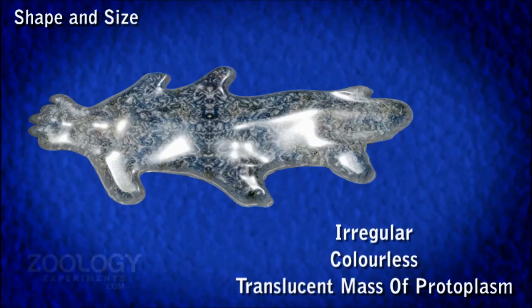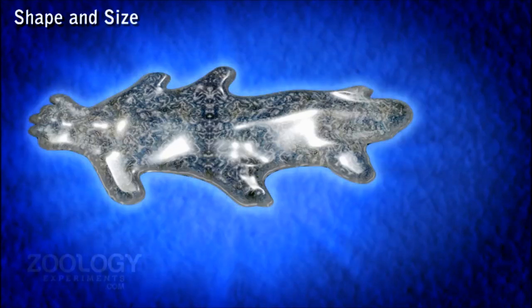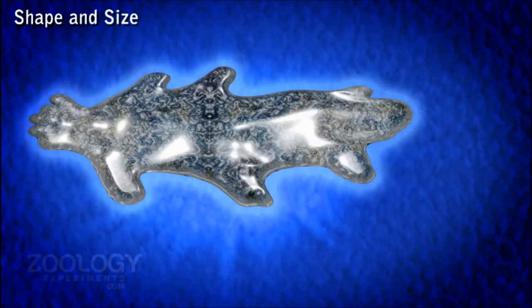It constantly changes its shape, producing and withdrawing finger-like processes called pseudopodia. When it withdraws all its pseudopodia, it becomes spherical in shape.